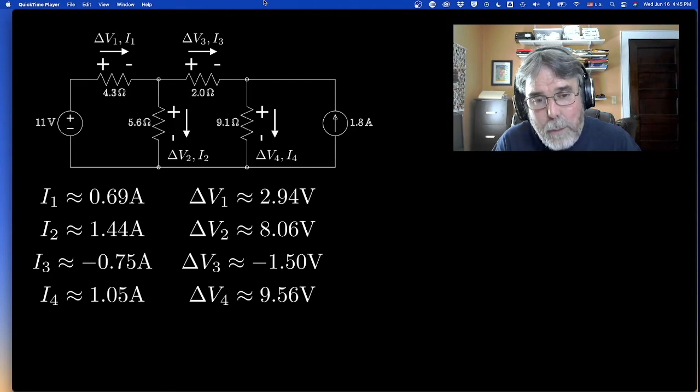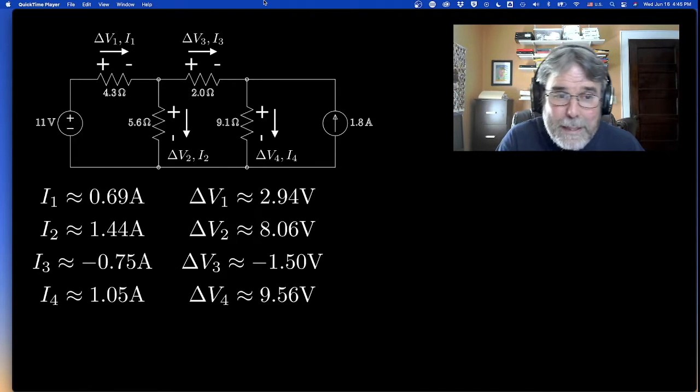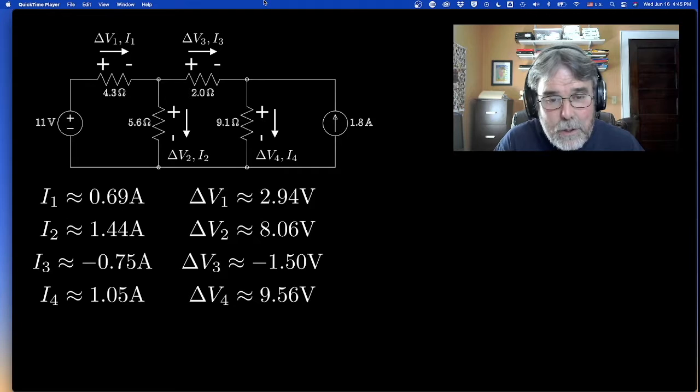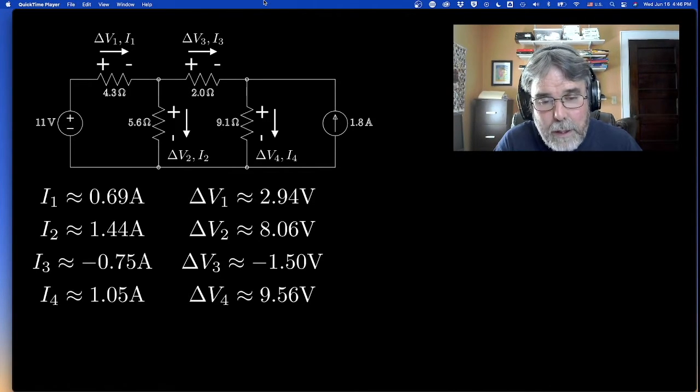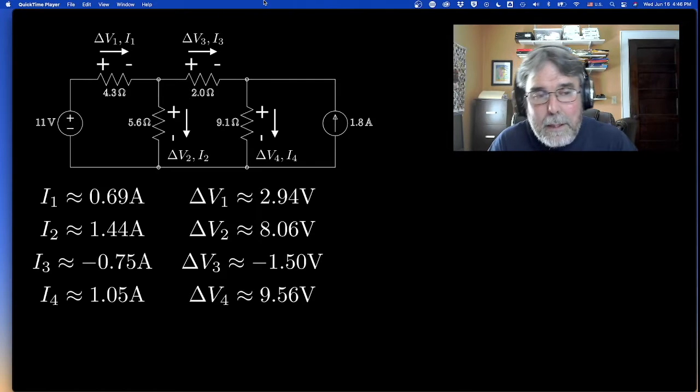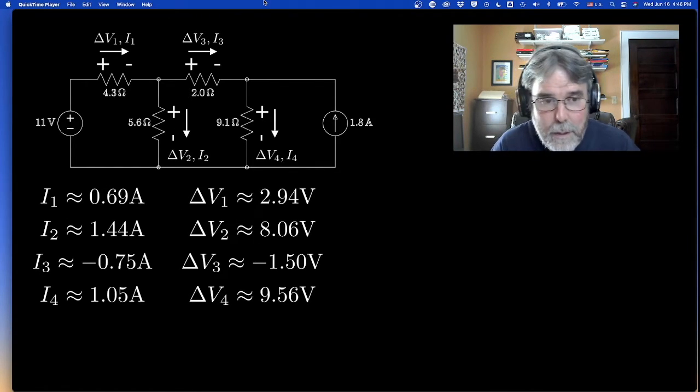And now if I ask you how much power is being dissipated in that resistor, how much energy per unit time is that resistor absorbing and then releasing in the form of heat, it's going to be 2.94 joules for every coulomb, but it's 0.69 coulombs per second. So it's going to be 2.94 times 0.69 joules per second. In other words, the power is the voltage drop times the current. Energy per unit charge times charge per unit time is energy per unit time. Okay? That's the idea.